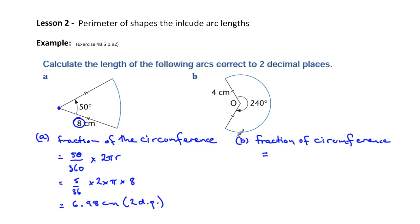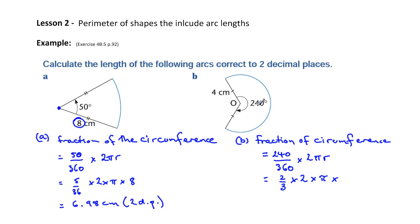In this second case, we've got 240 degrees out of a possible 360 degrees, times by the circumference of the circle again, which is 2πr. Using your calculator, this simplifies down to 2 thirds. So it's 2 thirds times 2 times π times the radius, and in this case the radius is 4 centimeters. Putting all of this into the calculator, we get the arc length of 16.76 centimeters, rounded to two decimal places.